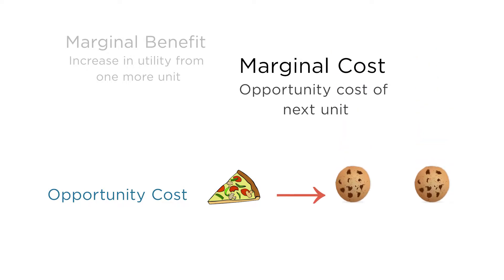This may be confusing. Why isn't the opportunity cost of a slice of pizza just the price of that slice of pizza? Because money itself doesn't matter — just what you can do with it. So what matters is not the dollars that you lay out; it's what else you could have done with those dollars. We can think about the marginal cost of an extra slice of pizza in terms of how many cookies you would have to give up for that slice.